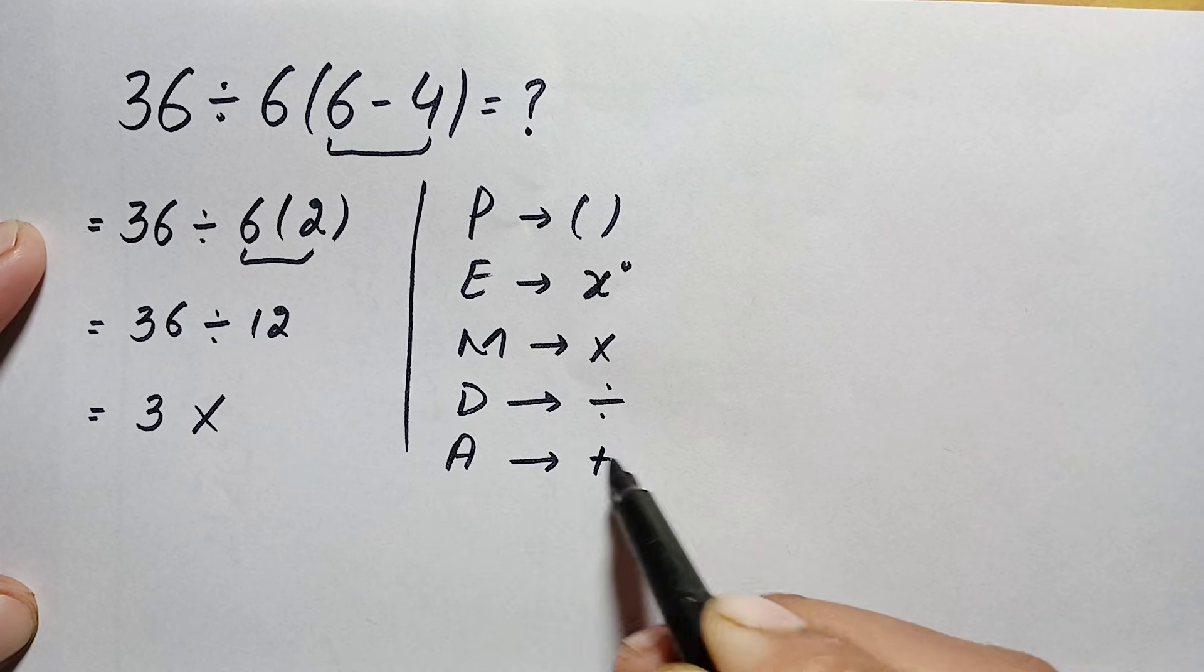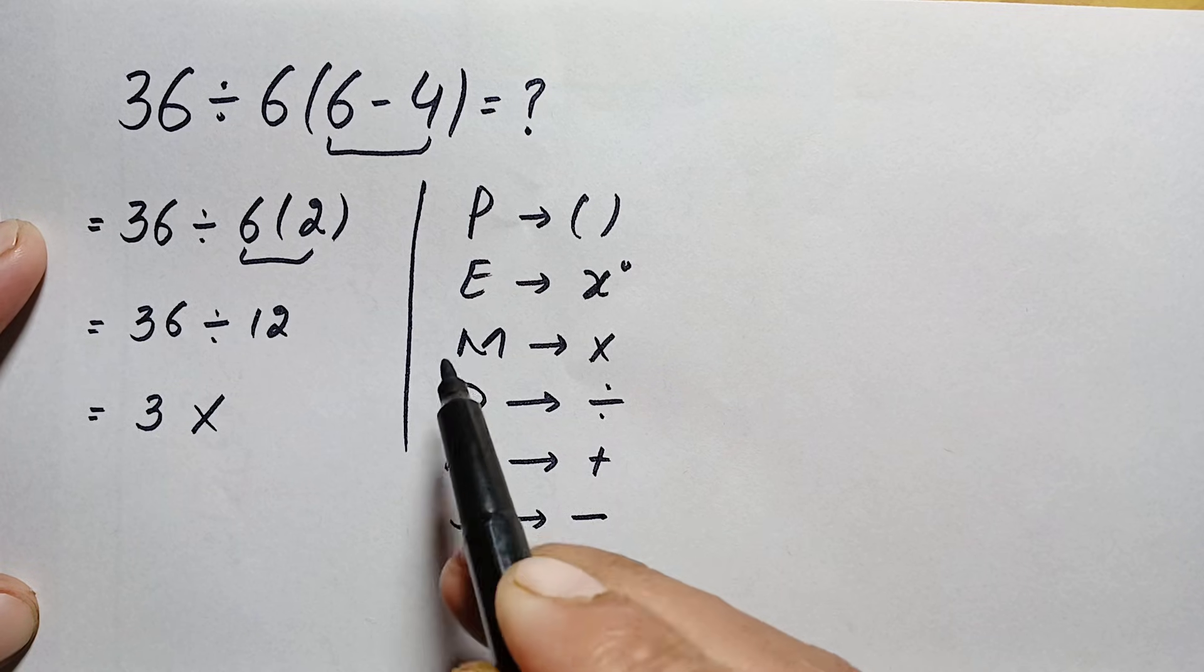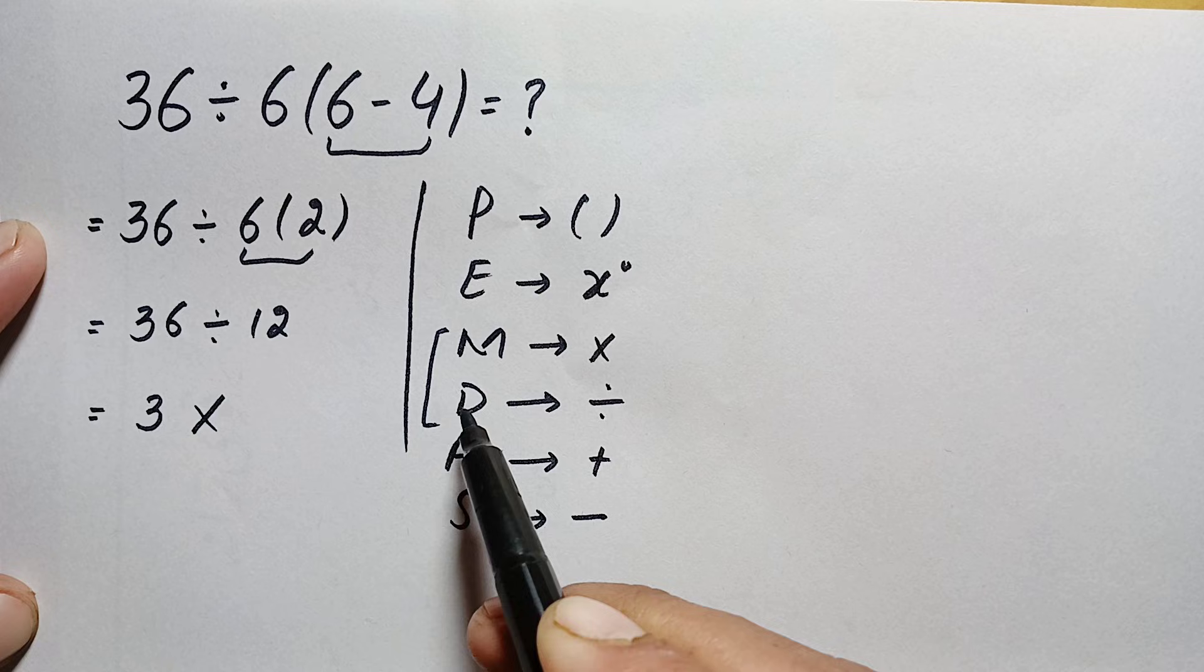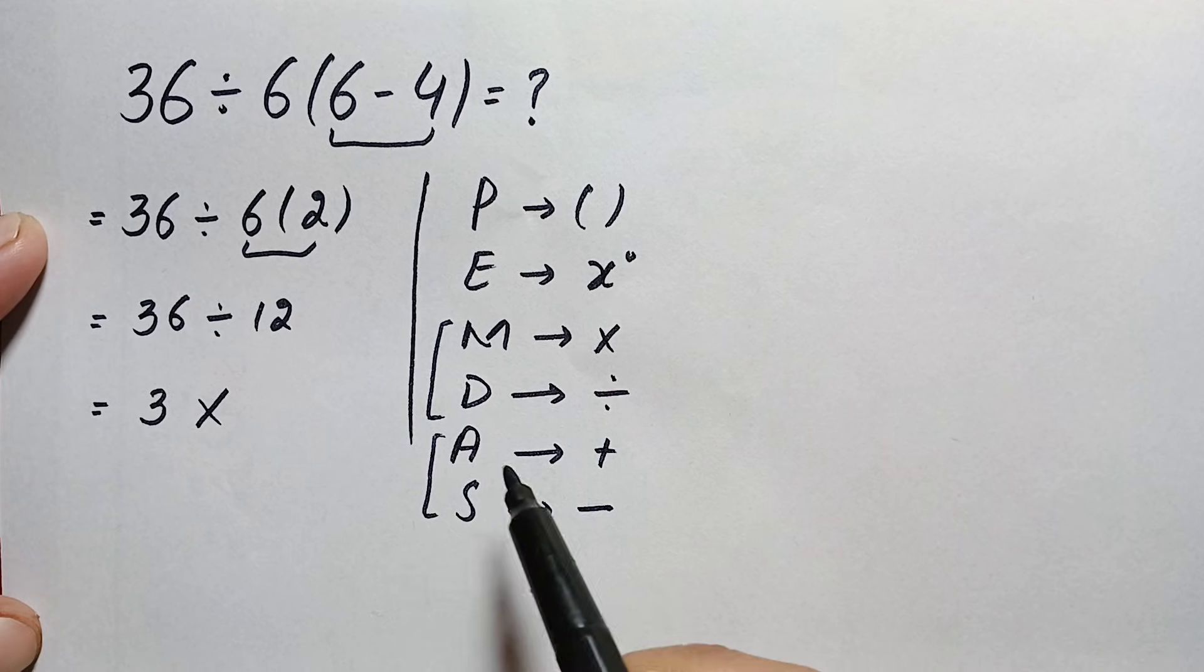A stands for addition and S stands for subtraction. We can do multiplication and division from left to right, as well as addition and subtraction from left to right. We will apply this rule here in this problem.